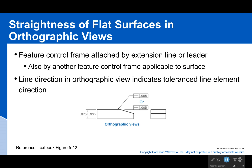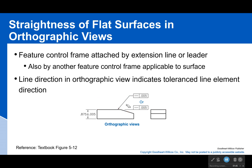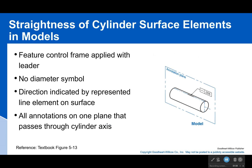In an orthographic view, the feature control frame can be attached with a leader or an extension line, and either direction tells me what direction I want the straightness in. Be very careful: the straightness tolerance symbol is actually pointing in the same direction you want your straightness. If you apply it in the wrong view, you're applying it incorrectly — even if it's still attached to the same surface, they do different things.